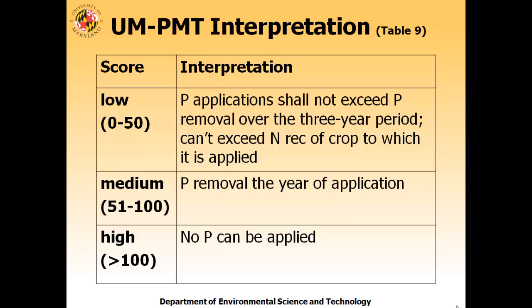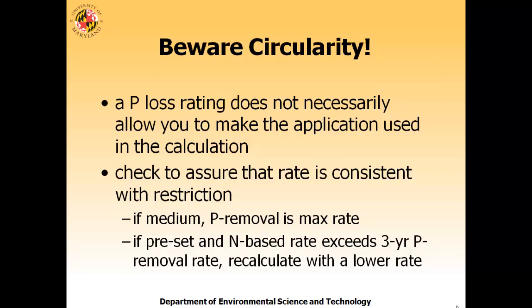I also want to point out what I call circularity. You put in a certain rate of organic material and it gives you a score, but when you look at the consequences of that score, it doesn't allow you to do what you put in. You have to go back and put in a new rate that's within the limits of the tool. For example, you might put in a preset rate that gives you a medium score, but it turns out the phosphate exceeds P removal—you can't do that. You've got to back it off to the P removal rate. Be aware of this especially with situations where crop removal is not great.